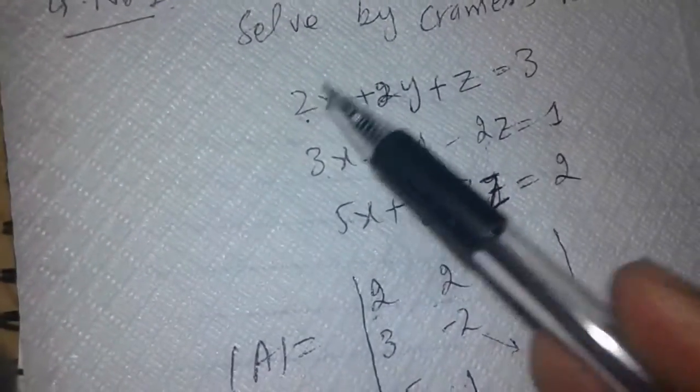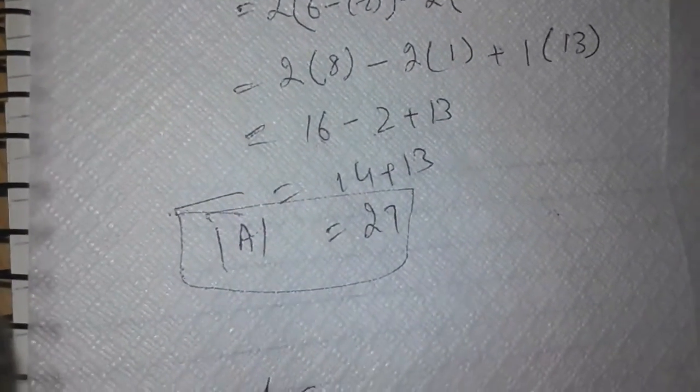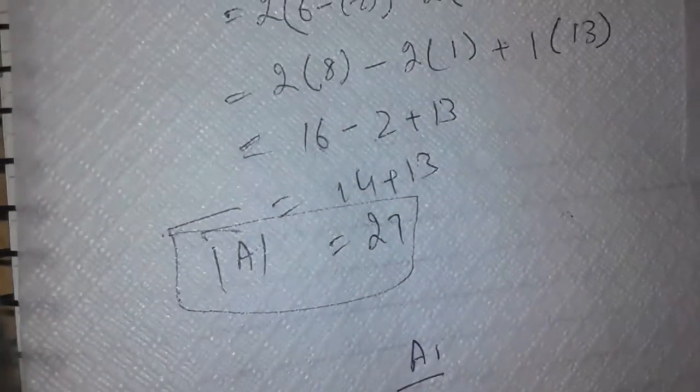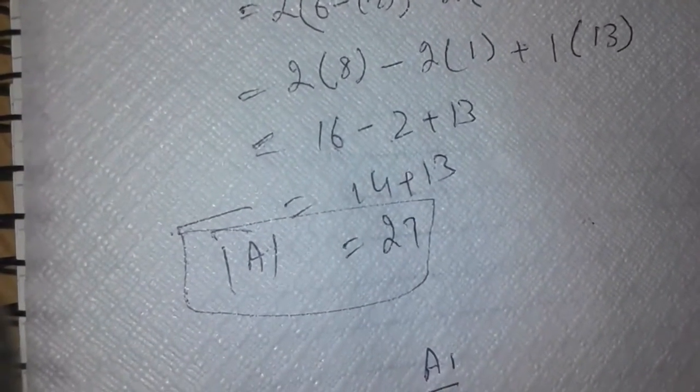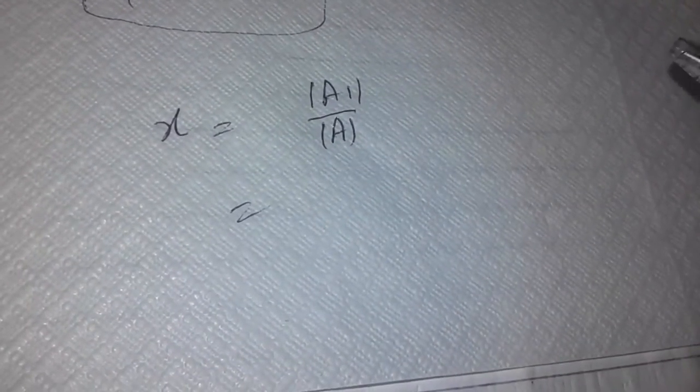First we find the first variable, then the second, then the third. The first variable is x, second is y, and third is z. In Kramer's rule, x equals A1 determinant over A determinant. The A1 determinant refers to the first variable. If we write A2 determinant it means we are talking about the second variable, and A3 for the third variable.